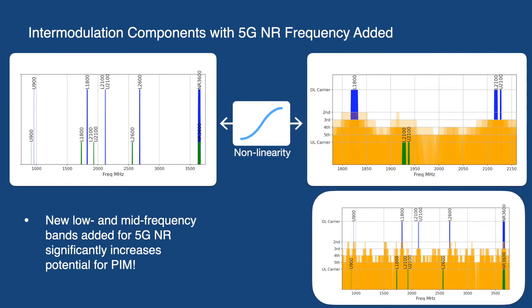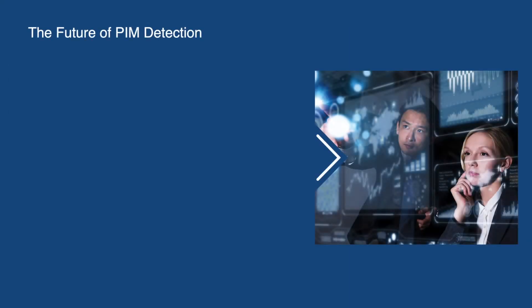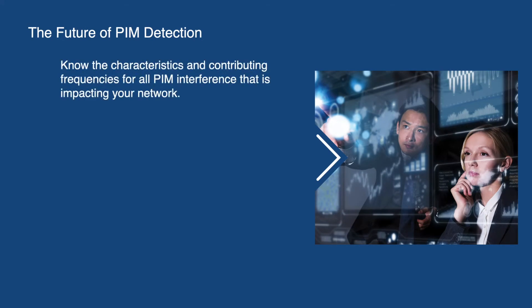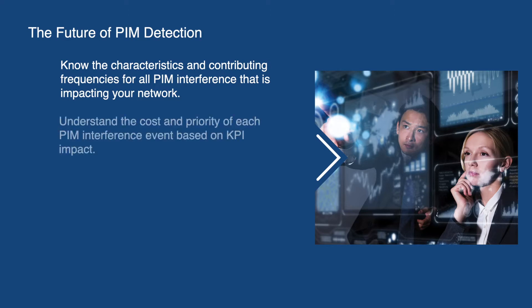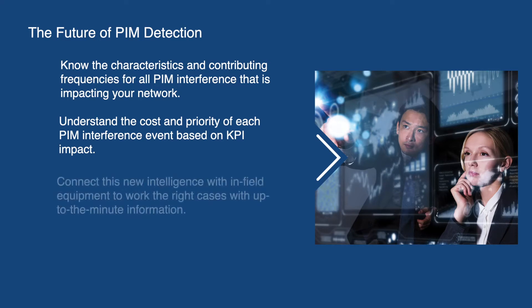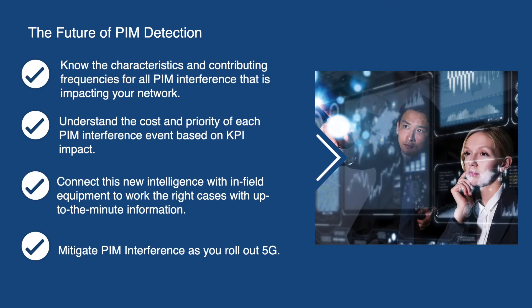Are you prepared for this with your 5G rollout? As a leading mobile operator, shouldn't you automatically know all of the PIM interference impacting your network, when it's occurring, and what the contributing frequencies are for each PIM interference event? Shouldn't you be able to automatically understand the cost and priority of each PIM interference event based on KPI impact? Shouldn't you be able to connect this new intelligence with your infield equipment to ensure your field teams are working the right cases with up-to-the-minute information? With the combination of Spectrum FX SpectrumNet solution and CCI's PIMPro tower, the answers to these questions are yes, and today we will show you how.